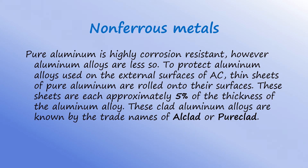Thin sheets of pure aluminum are pressed on both sides of an aluminum alloy sheet to protect it from corrosion. Think of aluminum foil pressed on each side. Care must be taken when working with clad aluminum sheeting that its surface is not scratched or damaged by tools or careless handling.